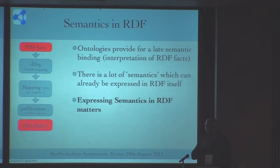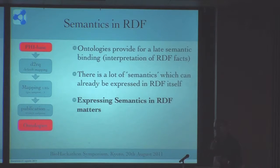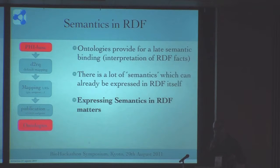One issue is where do we put semantics, and where do we say what does the RDF mean? We are exporting this data — the host, the host of interaction — what is an interaction? Where do you define it? Traditionally, you would define it in an ontology. It's not some sort of interpretation on top of your RDF — it's not that you export everything in RDF and then you start to do an ontology construct to assign some meaning to the data. But I think there is a lot of semantics which can already be expressed in RDF itself.